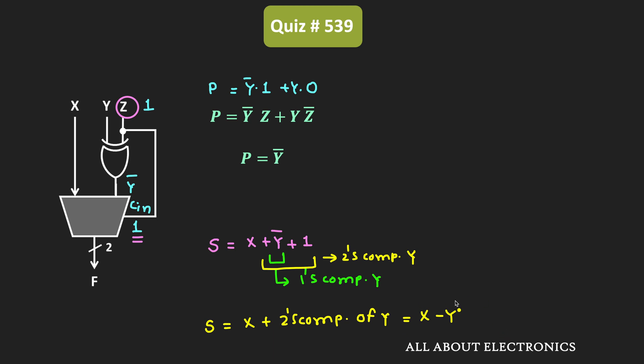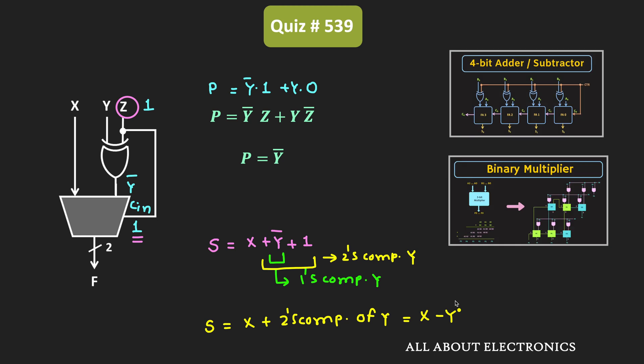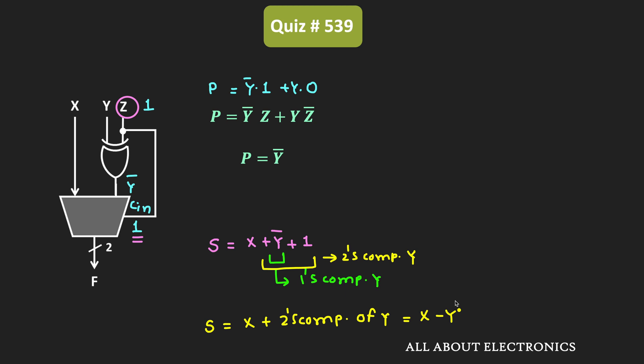Basically this circuit performs the subtraction of two digits. We have discussed this circuit in detail in an earlier video on the 4-bit full adder, subtractor, and multiplier — you can check that video. But even if you are not aware of the one's complement and two's complement concepts, from the truth table itself you can find that this circuit is performing subtraction.